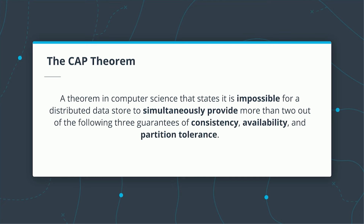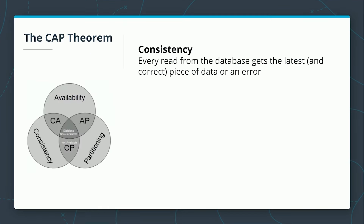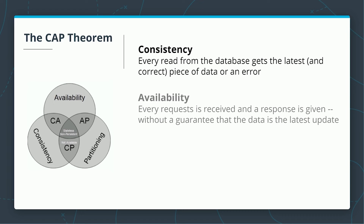Consistency: every read from the database gets the latest and correct piece of data, or it gets an error. Availability: every request is received and a response is given, without a guarantee that the data is the latest update.